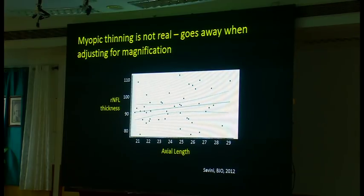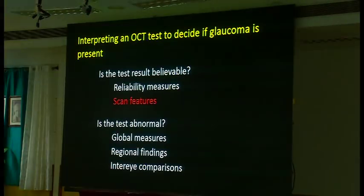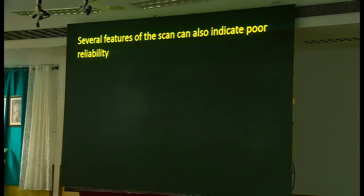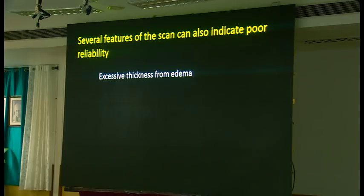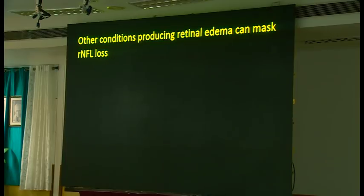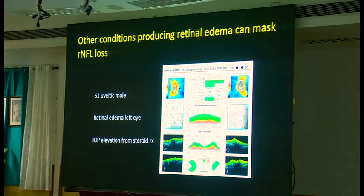Several features of the scan can indicate that a result shouldn't be believed. These include artifactual thickening from edema — especially in diabetics or uveitis patients — segmentation errors, which are probably the most common error we see, and whether the peaks of nerve fiber layer thickness are not quite where we'd expect them to be. Other conditions can produce retinal edema that masks retinal nerve fiber layer loss.